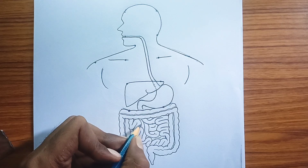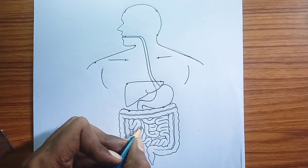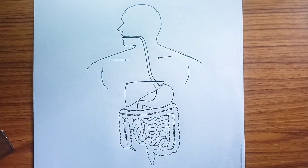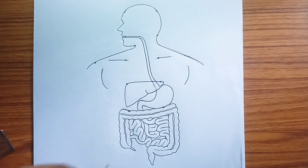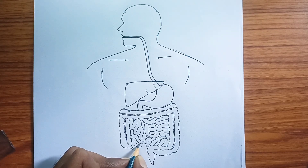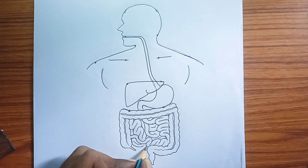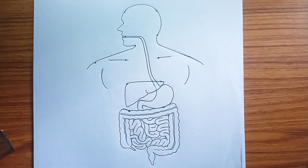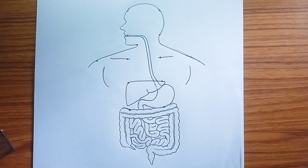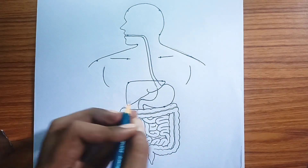Large intestine. A wider tube that follows the small intestine. Its primary functions are to absorb water and electrolytes from indigestible food matter and to form feces.